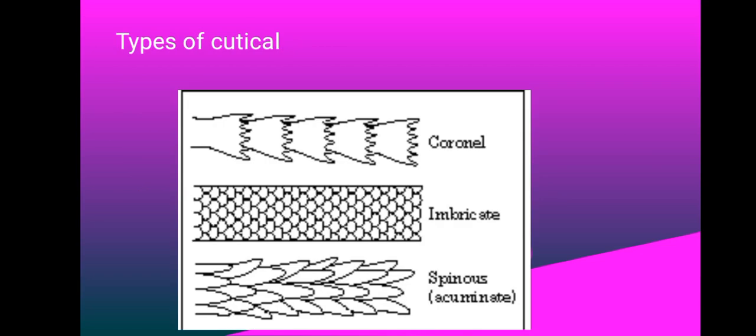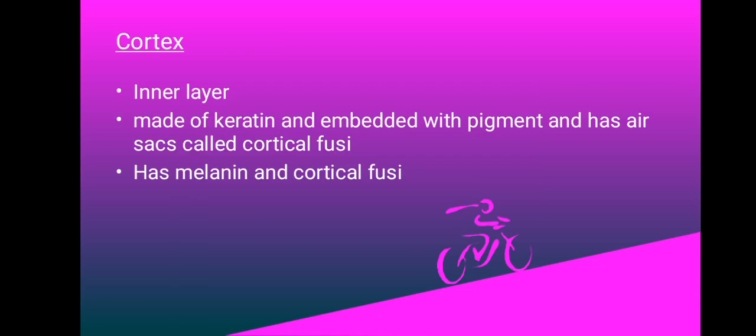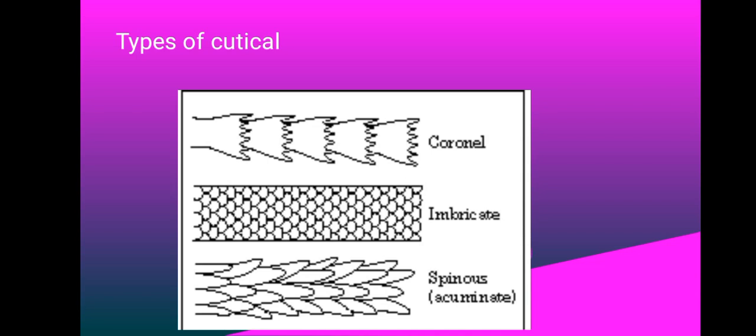We have types of cuticles: we have coronal, we have imbricate, and spinous. The pattern that's called imbricate, that's what humans have. Humans have the imbricate cuticle. The other types of cuticles are found in animals.